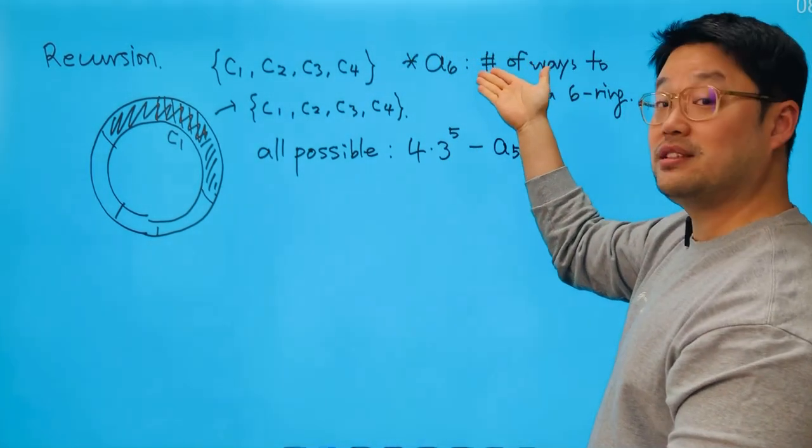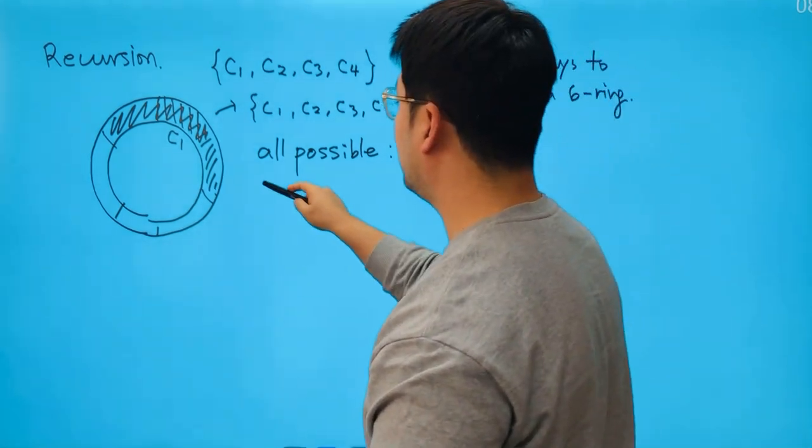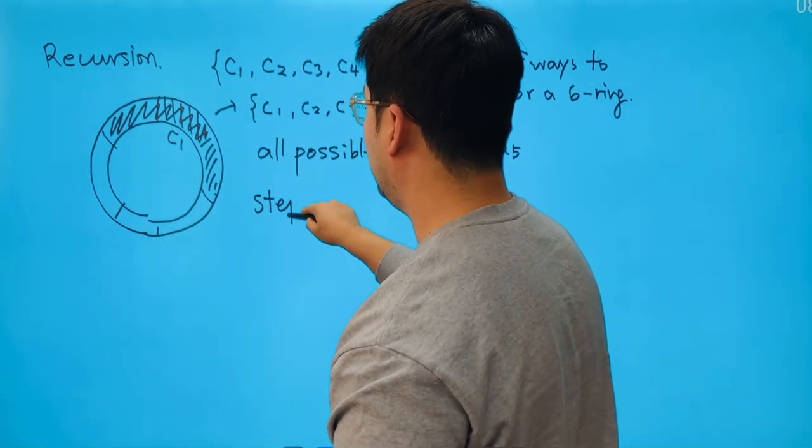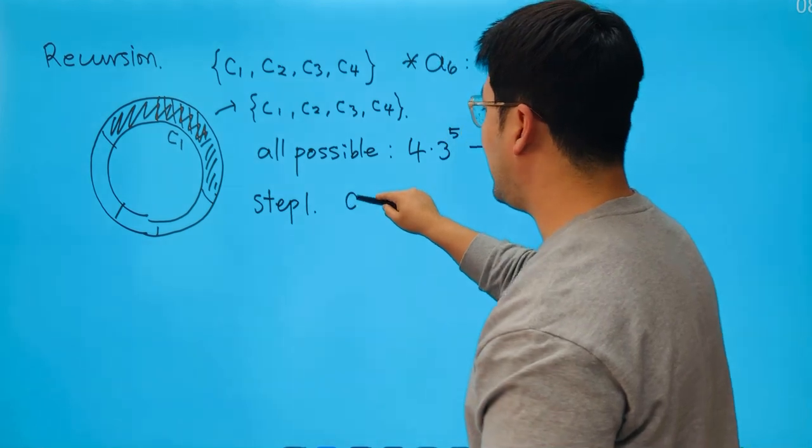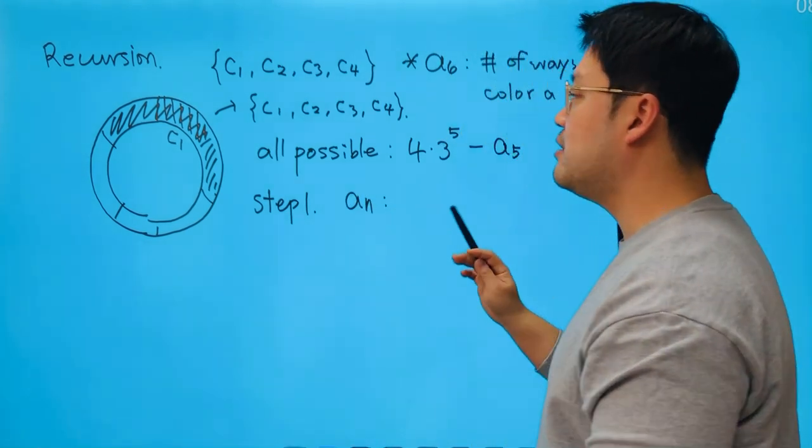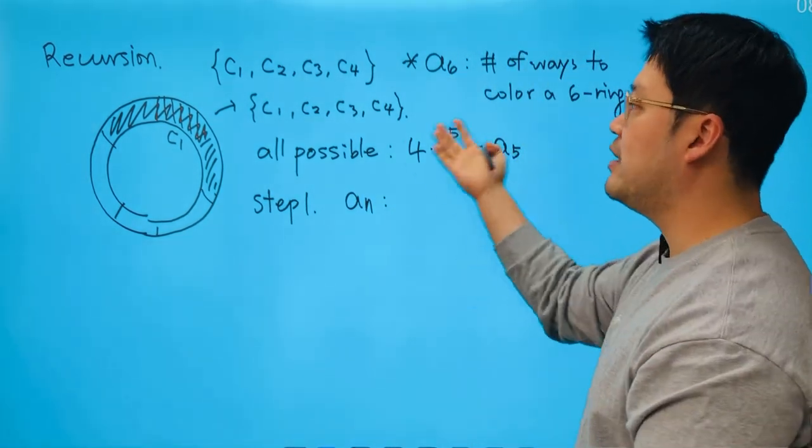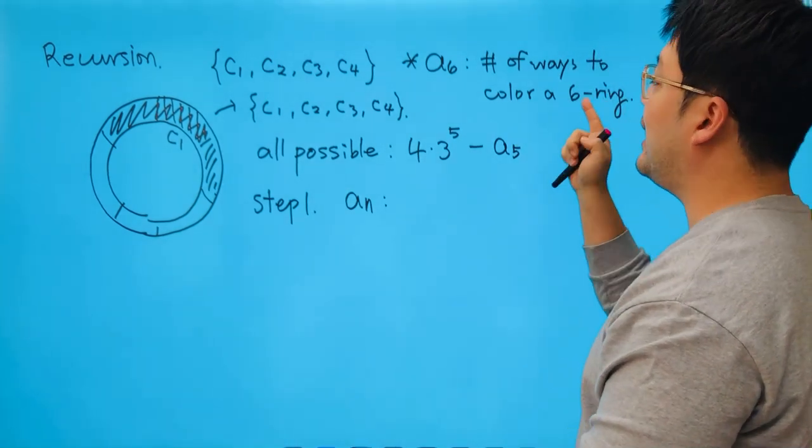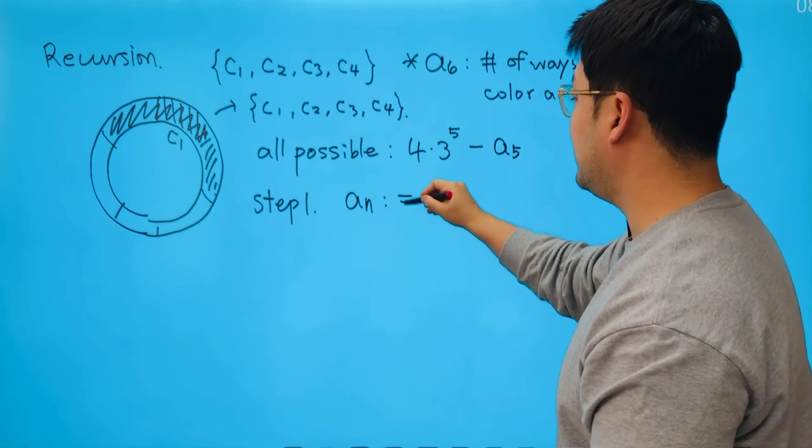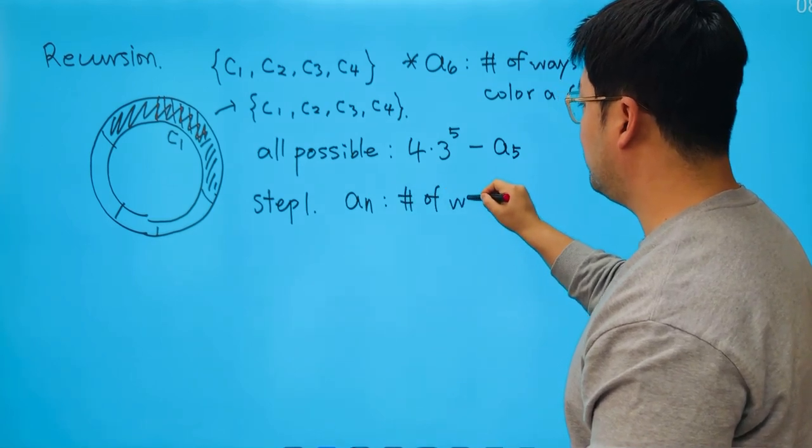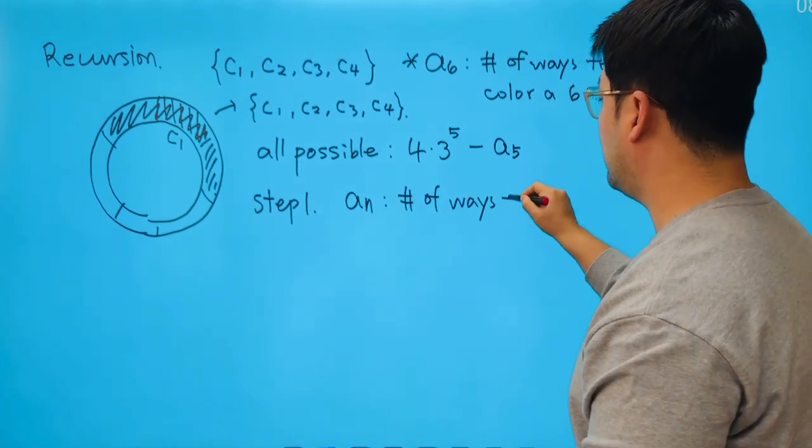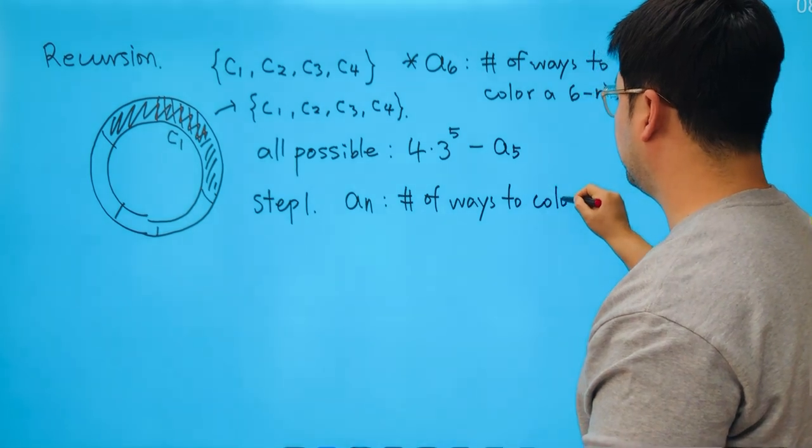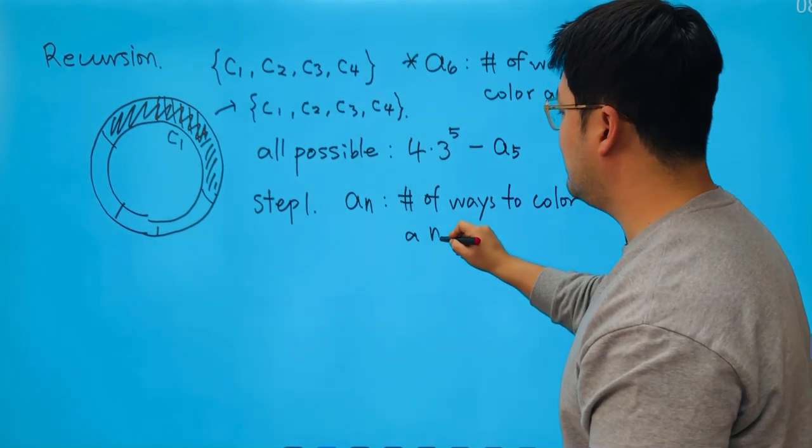So since we just have identified those generic statements, we can perform step number one. We can say step one, saying that A_n is the number of ways to color, or number of ways to use all those four paints or not all four paints, but using those paints to color an n-ring. So number of ways to color an n-ring.